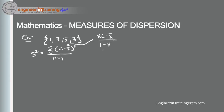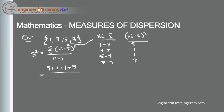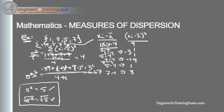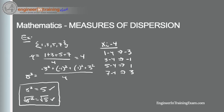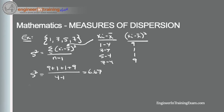We compute xᵢ minus x̄ for each: 1−4, 3−4, 5−4, and 7−4. Squaring each gives 9, 1, 1, and 9. Plugging into our formula: (9 + 1 + 1 + 9) divided by (4 − 1) gives us a sample variance of 6.67. Recall the population variance using the same observations was five — the sample variance is 6.67, which shows the difference.